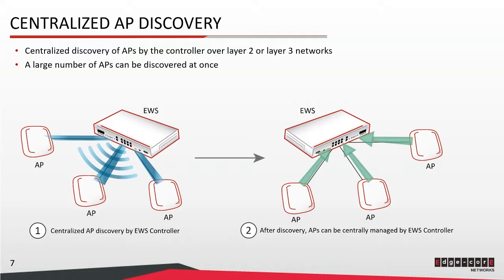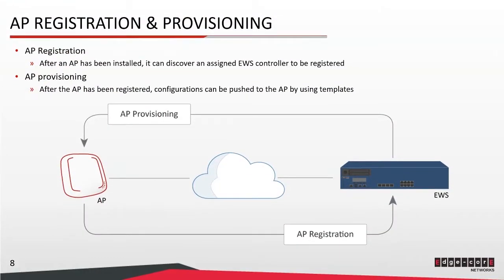After the APs have been discovered, they can be registered on the controller. Note that for this slide, we're showing you AP discovery initiated by the controller. Conversely, APs can be the ones to initiate the discovery and discover the controller. This is done with the help of the CAPWAP protocol. When CAPWAP is enabled and related settings have been configured on the controller and the APs, the APs can automatically discover and register with the controller. Then, after the APs have been registered, configurations can be pushed to the APs by using templates.